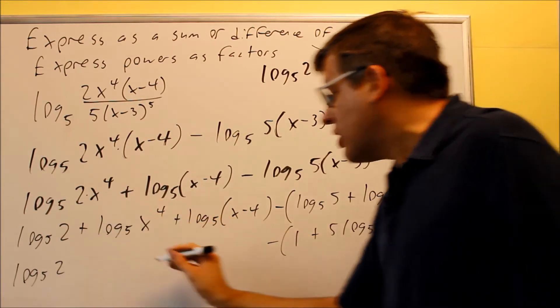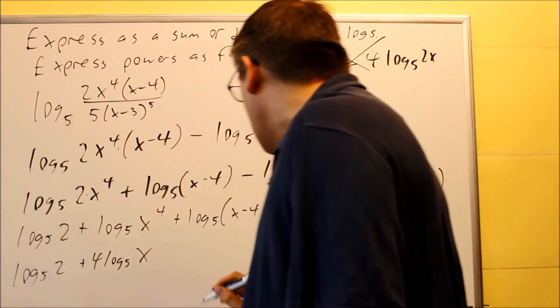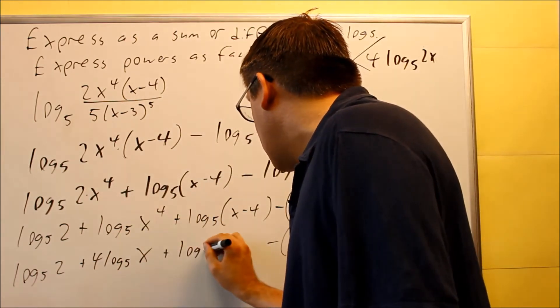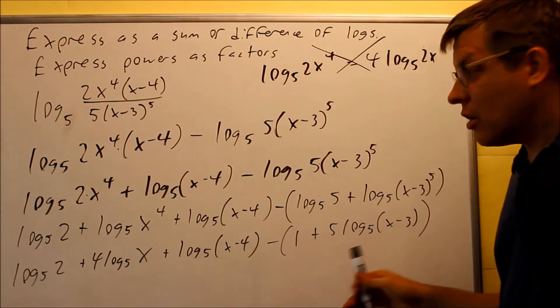The 4, that comes down in front here, so I have 4 log base 5 of x, and then I have log base 5 of (x minus 4). So now that is broken down as far as I can go.